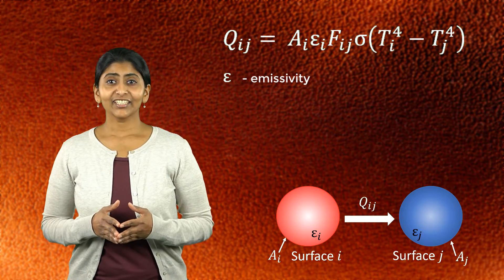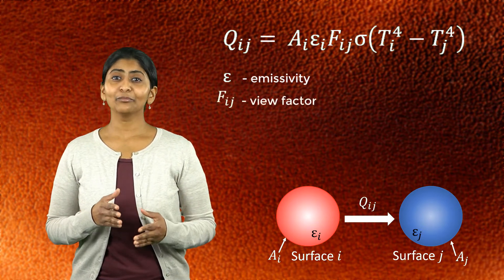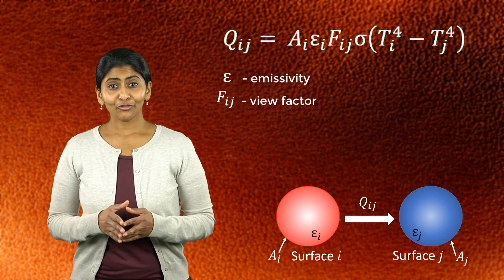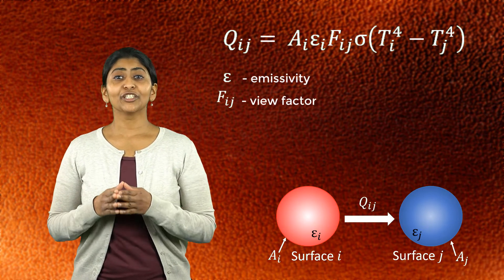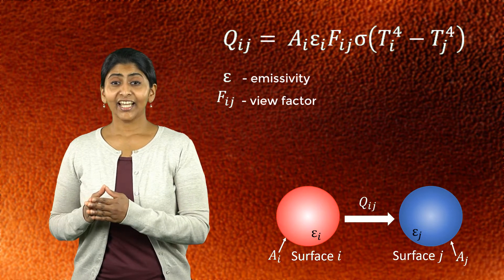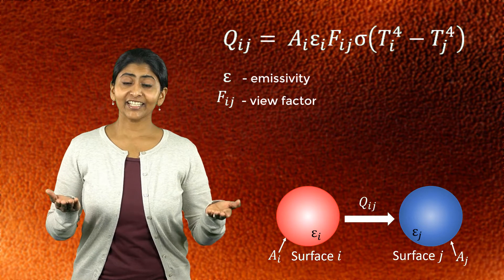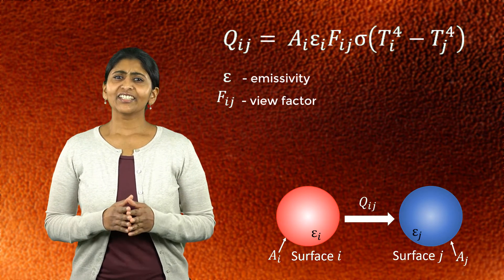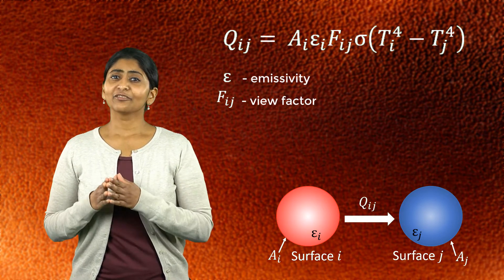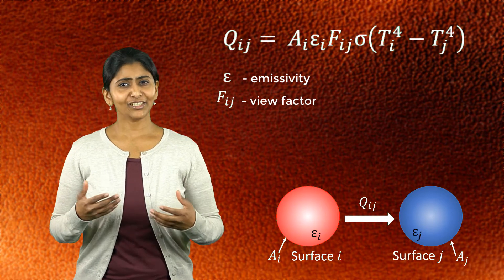F_ij is known as the view factor between the surfaces. The view factor is the fraction of the total radiant energy that leaves surface i, which arrives directly at surface j. We will discuss emissivity and view factor in more detail shortly.